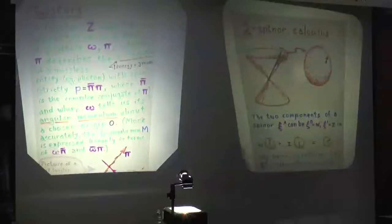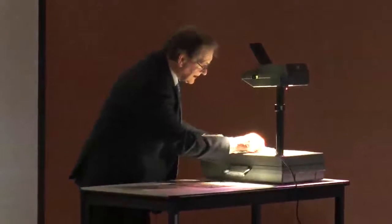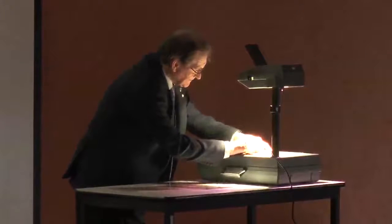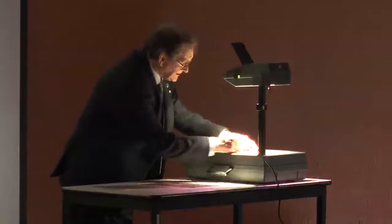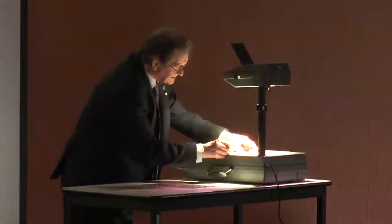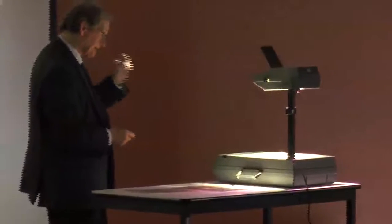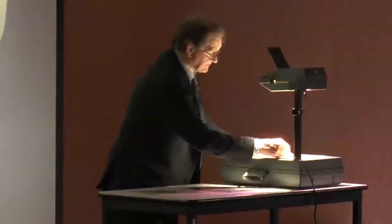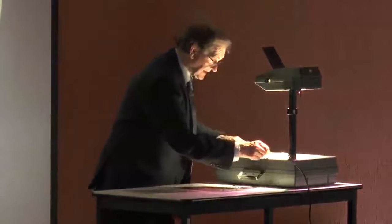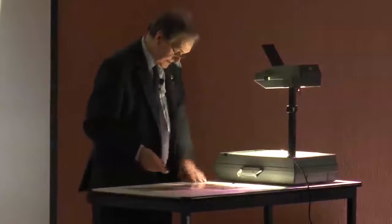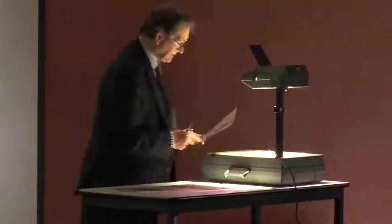Here is a spinner — the complete picture of a spinner is this little light ray here, pointing a certain light-distance into the future, so it's got a momentum to it, and it's got this flag plane, which is a direction on the sphere. It's got a two-valued ambiguity: if you rotate this thing once, it's gone to minus itself; rotate it again, it gets back to itself. That's a little feature you have to bear in mind.